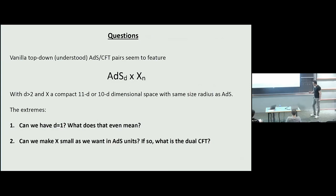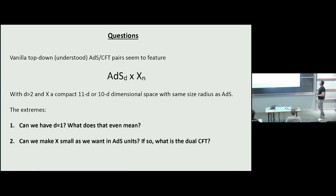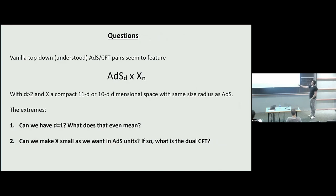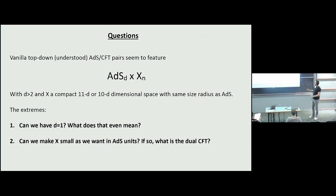When we do the simple top-down vanilla AdS/CFT pairs, what we have are Freund-Rubin solutions of the kind AdS_d × X_M, where X_M is a compact space, typically S^7, S^5, or some positively curved Einstein space. The two questions I want to address are: first, is it possible to put d=1 here — what would that mean? There's no curved one-dimensional space, but is there a meaning to this? And second, another sense of being extreme: is it possible to make this internal space as small as one would like, even vanishingly small? What would that mean for the dual CFT?